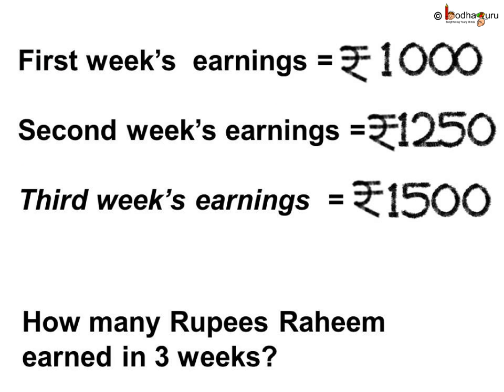Let us write down what all information we have. In the first week Rahim earned rupees 1000, so the first week's earnings is equal to 1000. In the second week he earned rupees 1250, so the second week's earnings is equal to 1250. In the third week he earned rupees 1500, so the third week's earnings is equal to 1500.